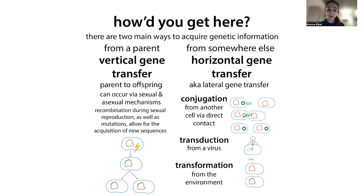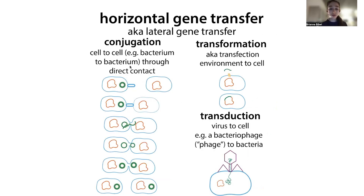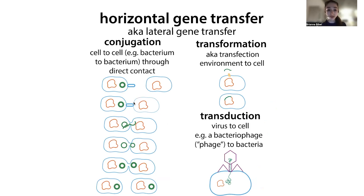With horizontal gene transfer, instead of going from parent to offspring, genetic information comes from somewhere else. Depending on how it's transferred, we can call it different things. The three types are conjugation, transduction, and transformation. Conjugation involves direct cell-to-cell contact, where bacteria are actually touching one another.